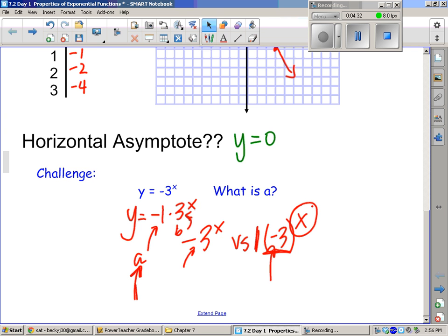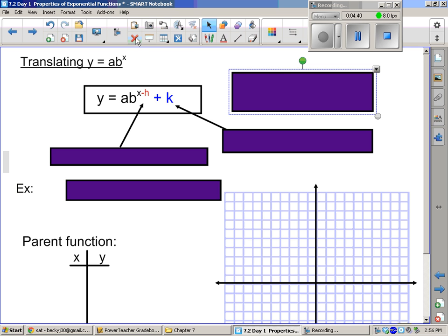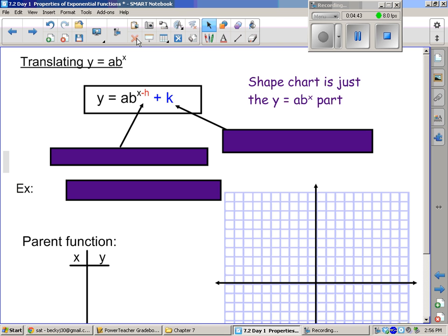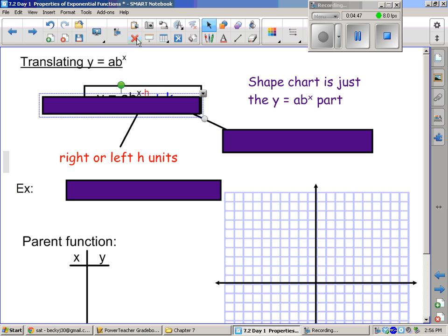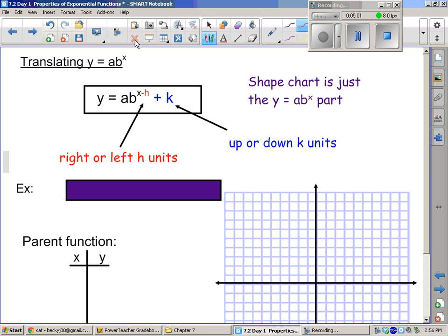Let's do some more graphing, your favorite. Translating. This is the h and k here that's going to tell us to move, either right or left, and up and down. So the h tells us right or left, and now it's a minus h. So that's the backwards thing, like always. Just like it was with parabolas, absolute values, square roots, everything. So the right is a minus, and the left is a plus. And then k, up is plus, and down is minus, like you'd normally think.